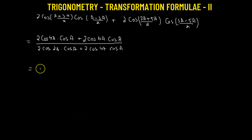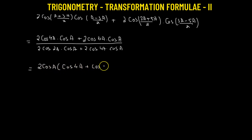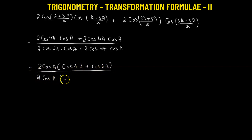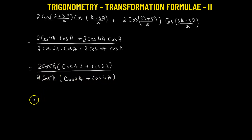We can take 2 times cosine of angle a as the common factor in the numerator, which gives cosine of 4a plus cosine of 6a, all divided by 2 times cosine of a multiplied by cosine of 2a plus cosine of 4a. So we can factor out 2 cosine a from both numerator and denominator. Now again we have the sum of cosine functions in both, so we'll apply the transformation formula.